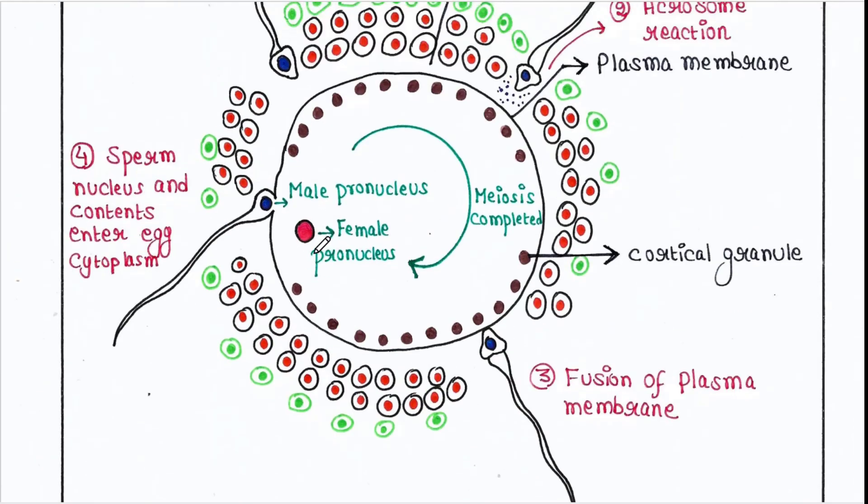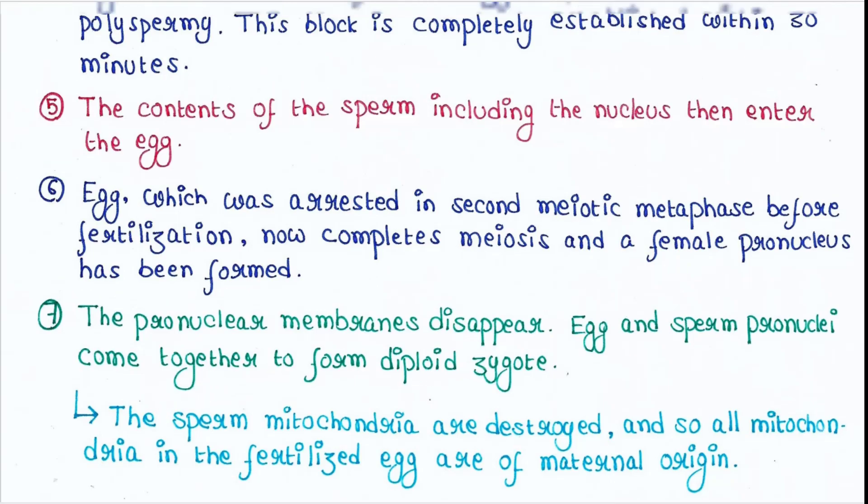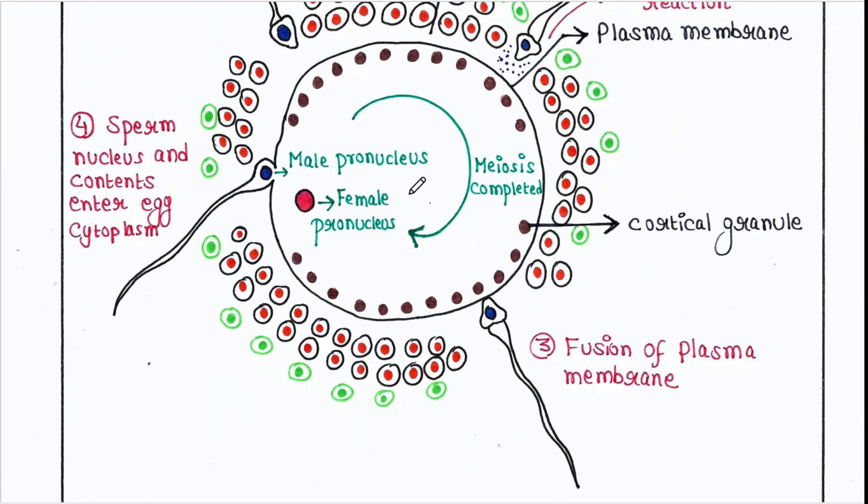So now here is the female pronucleus. The pronuclear membranes of sperm pronucleus as well as egg pronucleus disappear. Egg and sperm pronuclei come together to form diploid zygote. Male pronucleus is haploid, female pronucleus is haploid. When they fuse together we will get a diploid zygote.